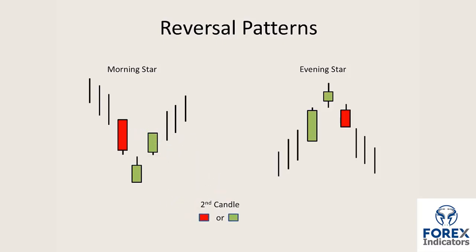The second candle in the three-candle pattern can be green or red. These patterns are more frequent on the daily, weekly and monthly chart.